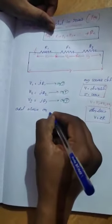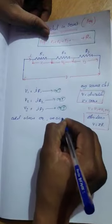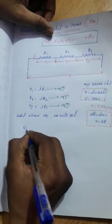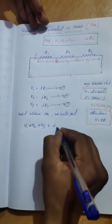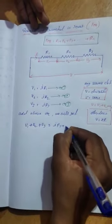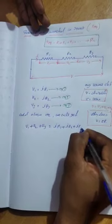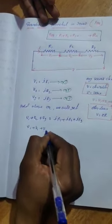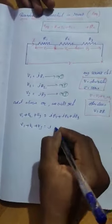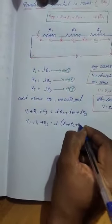From these three equations, add all three equations. When we add them, on the left-hand side we get V1 plus V2 plus V3, and on the right-hand side we get I into R1 plus I into R2 plus I into R3. This simplifies to V1 plus V2 plus V3 equal to I into R1 plus R2 plus R3.